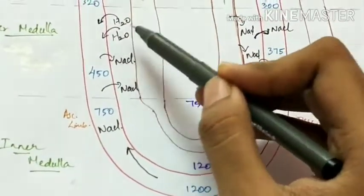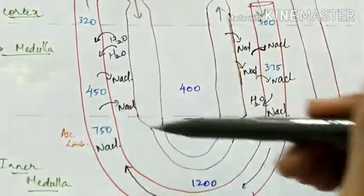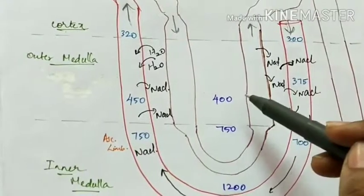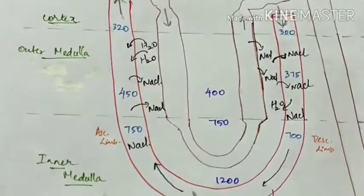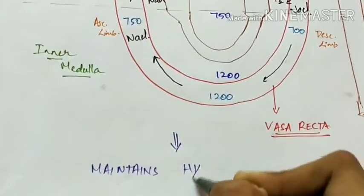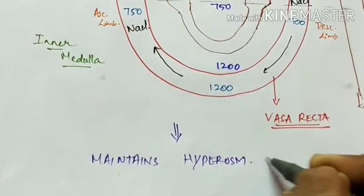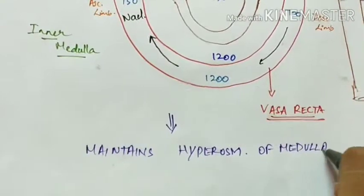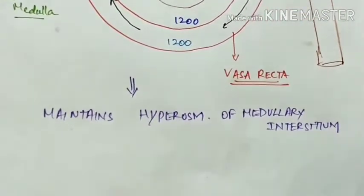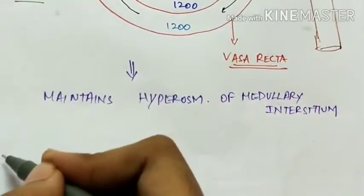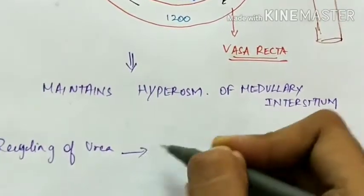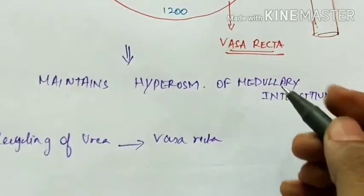Thus, the Vasa Recta retains sodium chloride in the medullary interstitium and removes water from it, thereby maintaining the hyperosmolarity of the medullary interstitium which was created by the counter-current multiplier.